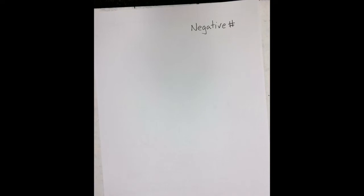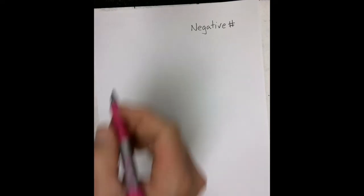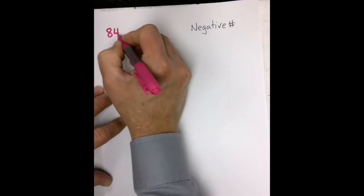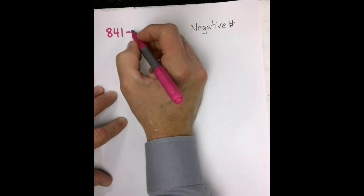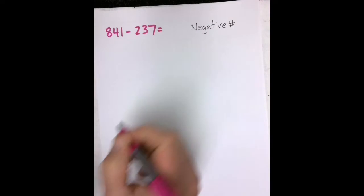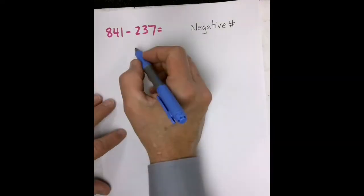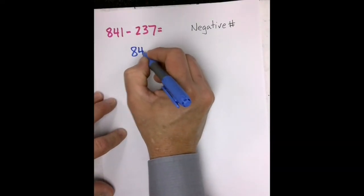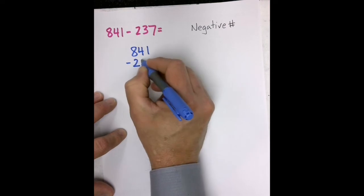Sometimes when you use the negative number strategy, you'll notice that not all of the numbers come out negatively. Let's take a look at this problem: 841 minus 237. I'm going to go ahead and stack my numbers, starting with my larger number, and placing the smaller number underneath.